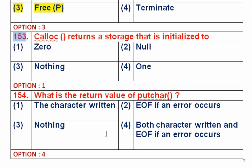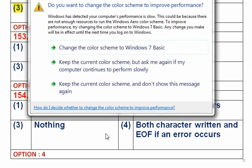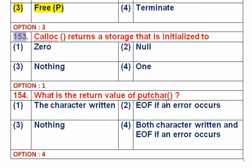Question number 153: Calloc returns storage initialized to — option 1 is 0, option 2 is none, option 3 is nothing, option 4 is 1. Out of the three dynamic memory allocation functions, calloc is the only function that initializes the allocated memory. When the allocation is complete, that initialized value is 0. So option 1 is the right answer.